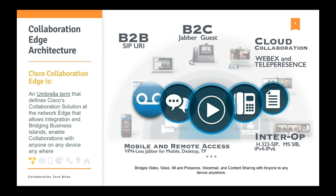It enables voice, video, instant messages, presence, voicemail, and content sharing with anyone, to any device, anywhere in the world. The umbrella includes audio and video communication for business-to-business through SIP URI, business-to-consumer through Jabber Guest, cloud collaboration through CMR — Cisco Cloud Collaboration Meeting Room, formerly known as Webex-enabled Telepresence — and also interoperability between H.323 and SIP at the edge of the network, with Microsoft Skype for Business or Microsoft Lync 2013, and between IPv4 and IPv6.